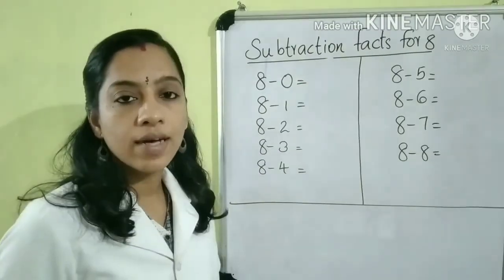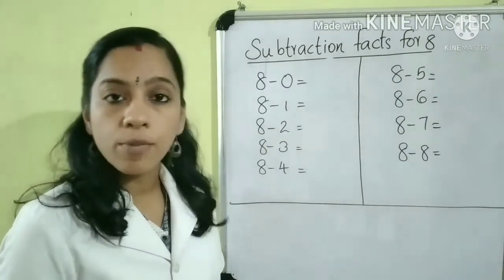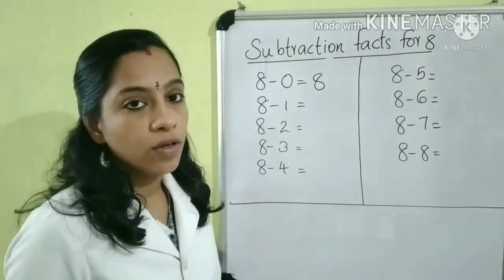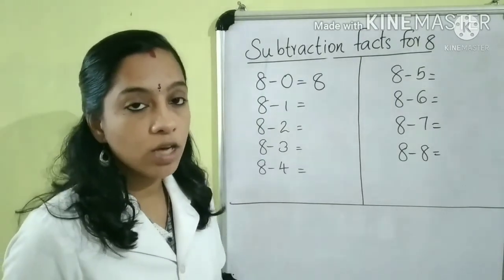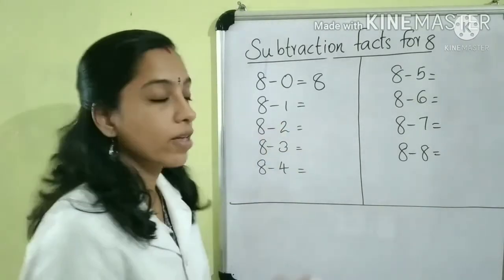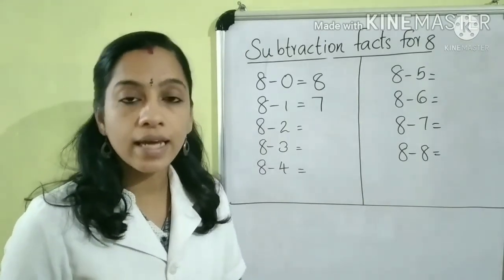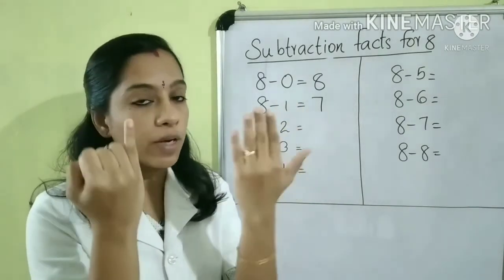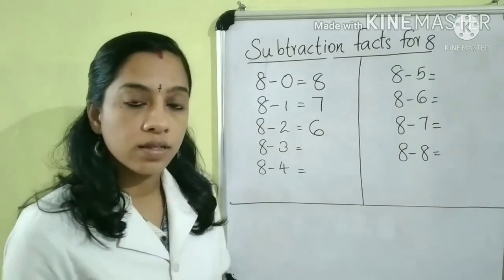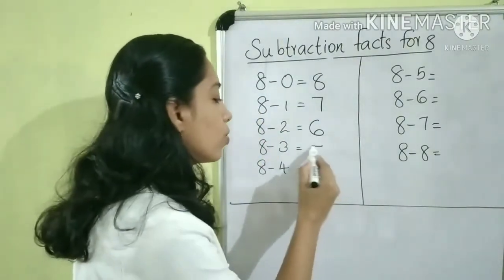Shall we start? First, we are going to subtract 0 from 8. We know 8 minus 0 is equal to 8, using the property of subtraction. Next, 8 minus 1: subtracting 1 gives the number before, which is 7. So 8 minus 1 is equal to 7. Next, 8 minus 2: take 8 fingers, fold 2 — that gives 6. 8 minus 3: take 8 fingers, fold 3 — that gives 5. So 8 minus 3 is equal to 5.